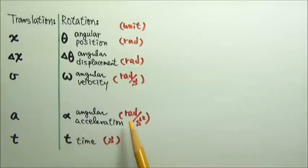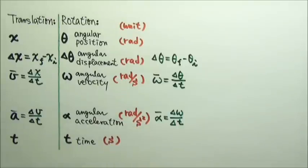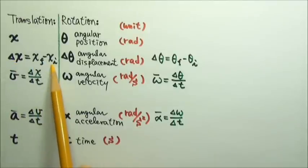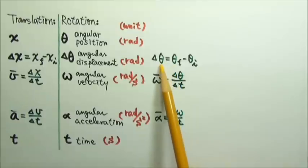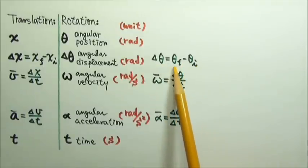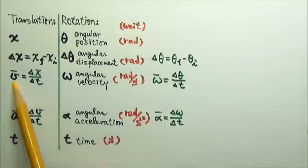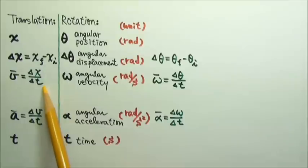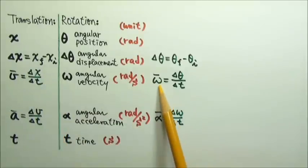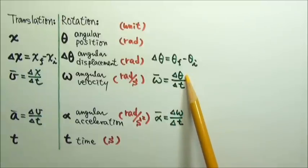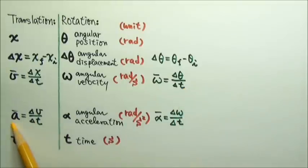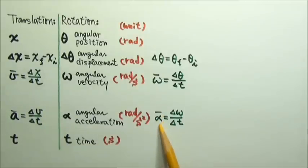For alpha, the standard unit is radians per second squared. Just like displacement is the final position minus the initial position, delta theta is the final minus the initial angle. By definition, average velocity is displacement divided by time, so the average angular velocity is angular displacement divided by time. And average acceleration is delta v over delta t, so the average angular acceleration is delta omega over delta t.